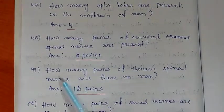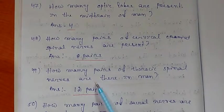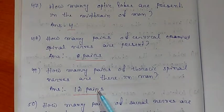Question number 49: How many pairs of thoracic spinal nerves are there in man? Answer: 12 pairs.